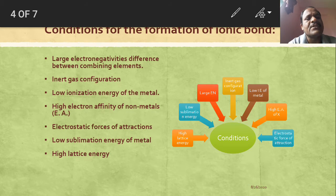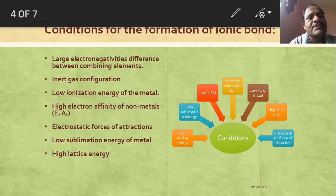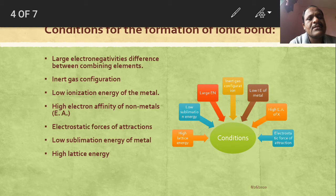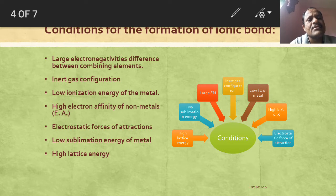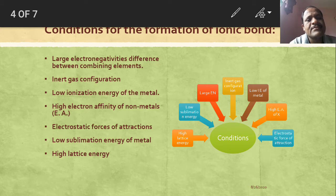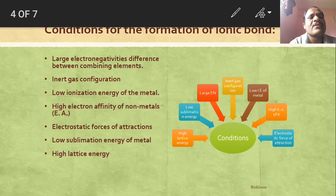The formation of ionic compounds requires some conditions, already discussed in previous lectures: the combining atoms must have a very large electronegativity difference; the most stable energy configuration must be satisfied for stability; the metal must have low ionization energy so it can easily lose electrons when combining with a non-metal; the non-metal must have high electron affinity for accepting electrons; and there should be a very strong electrostatic force of attraction, with low sublimation energy and high lattice energy for the metal.